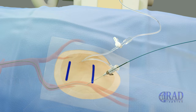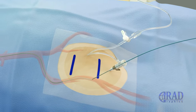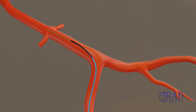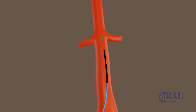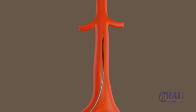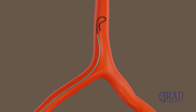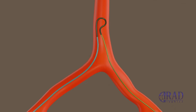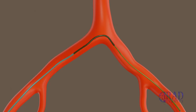A curved catheter is advanced over the wire through the sheath into the lower aorta. Subsequently, the tip is formed by pulling back the wire. Then, the wire is re-advanced, and this combination is used to select the contralateral common iliac artery.